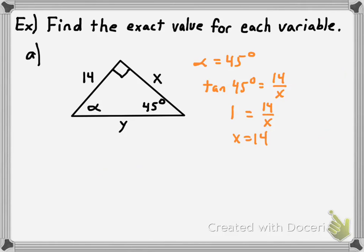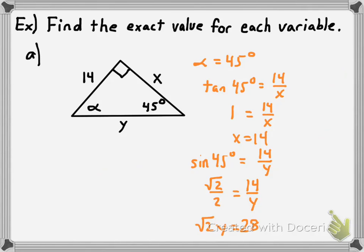To find y, the hypotenuse, we know the opposite leg is 14, so we use a sine ratio: sin(45°) = 14/y. Substituting √2/2 = 14/y and cross-multiplying gives √2 · y = 28. Dividing both sides by √2 gives y = 28/√2. Rationalizing the denominator by multiplying top and bottom by √2 gives 28√2/2, which simplifies to 14√2.